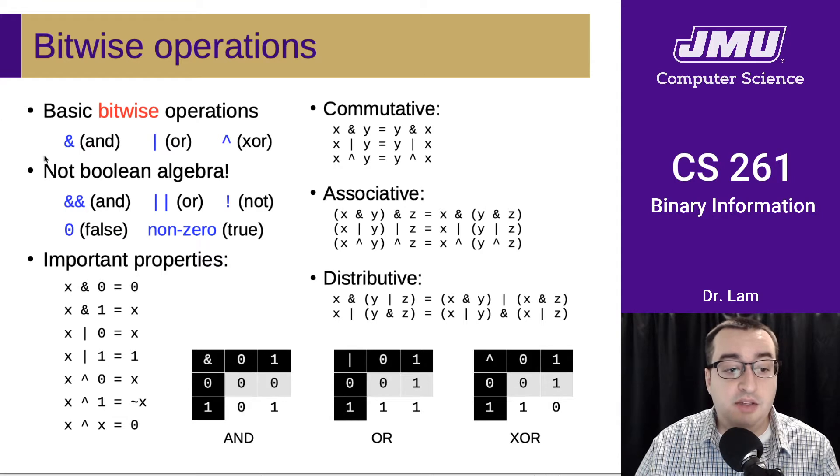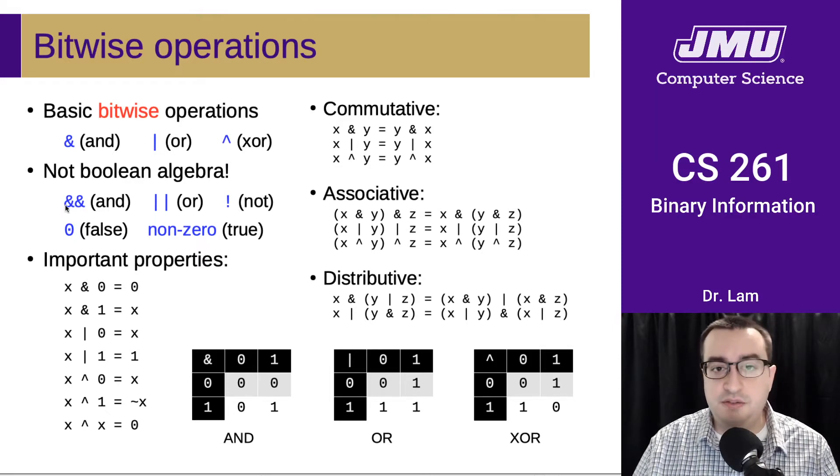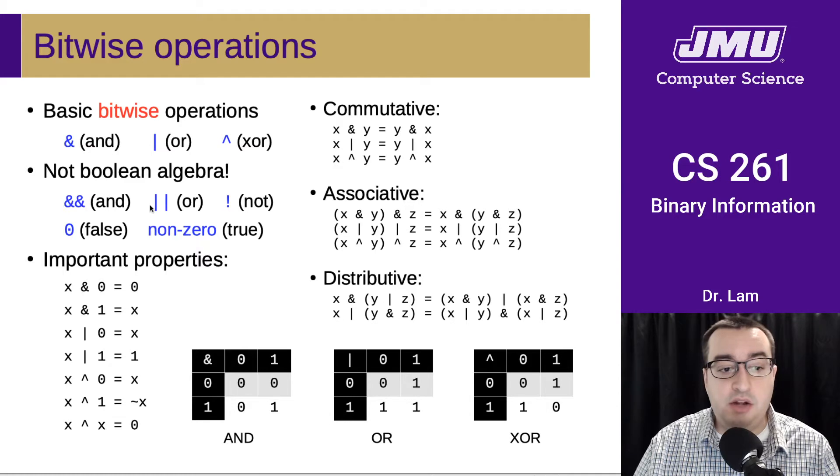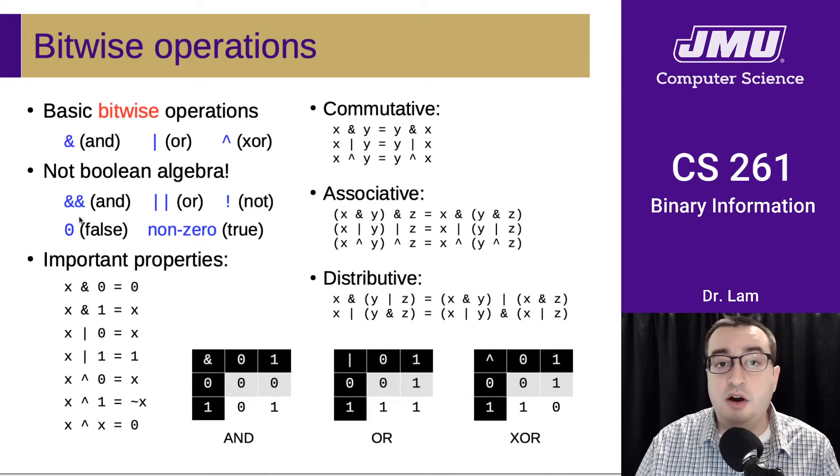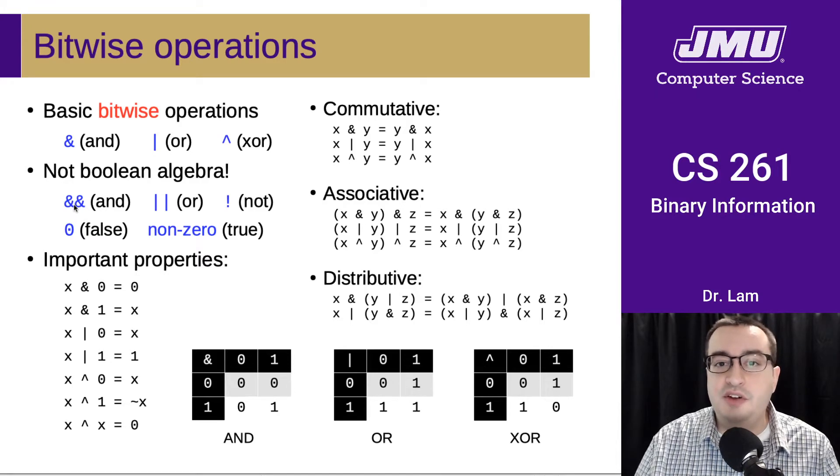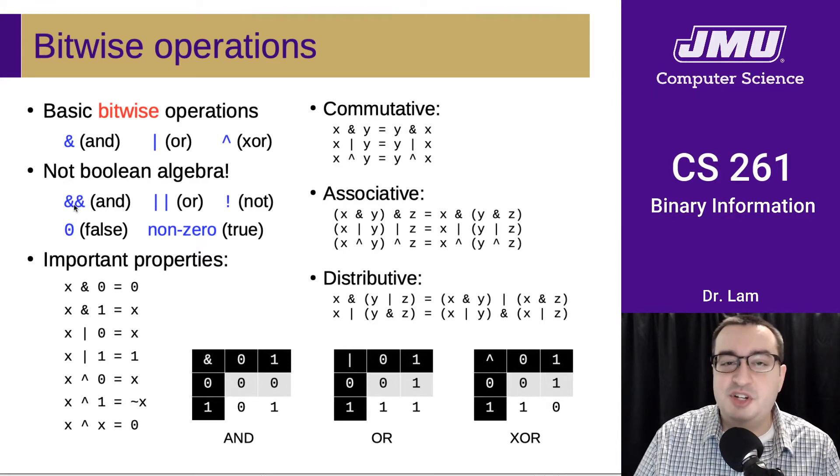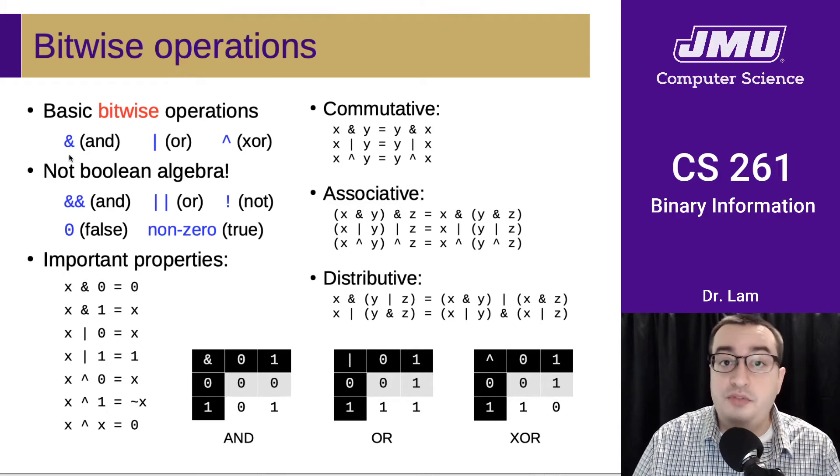There is the bitwise AND, the bitwise OR, and the bitwise XOR. It's important to note that these are different from Boolean algebra. Boolean algebra operators—the AND, OR, and NOT—operate on Boolean values, which in C are encoded using numbers 0 and 1. But that only works on the first bit, which stores the 0 or 1. Bitwise operations generally operate on all of the bits in the number.